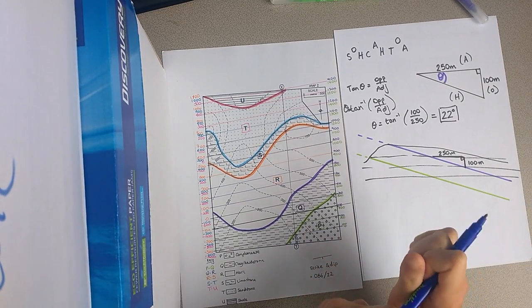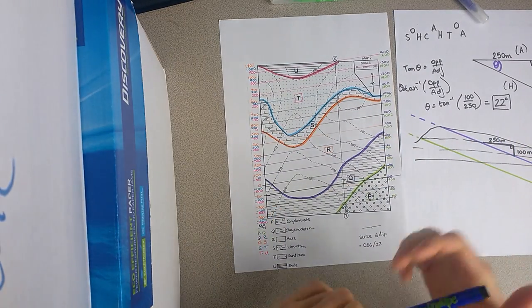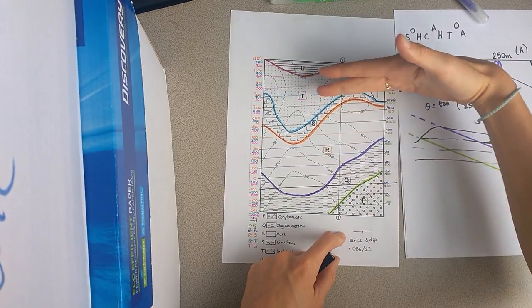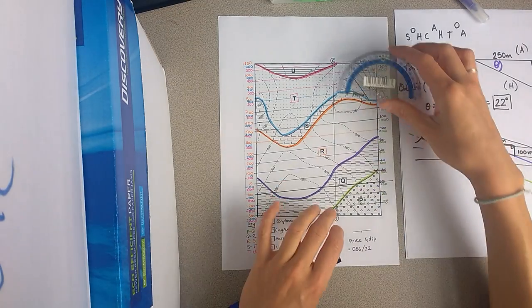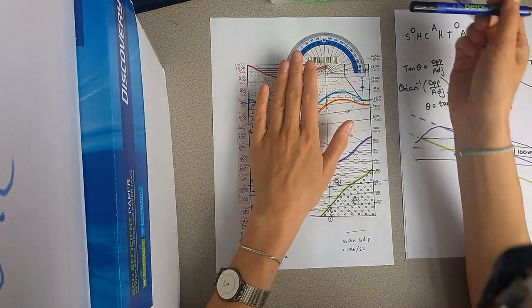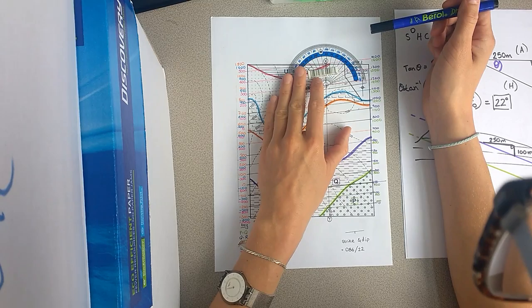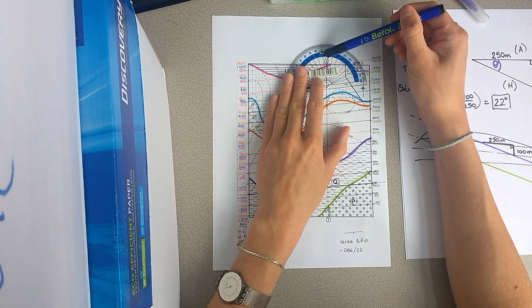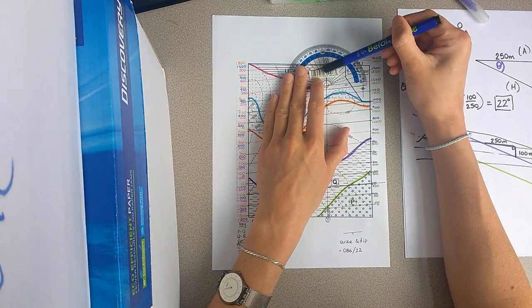And if we wanted to know what the strike is, then what we have to do is we have to look at the orientation of these lines. So if north is at the top of the map, if we measure round from north to the orientation of these using a protractor. Okay, so if we measure from north around here, like this, you will see that these lines are at just over 80 degrees. So if we go round from 0 to where north is, you'll say that this is 86 degrees.